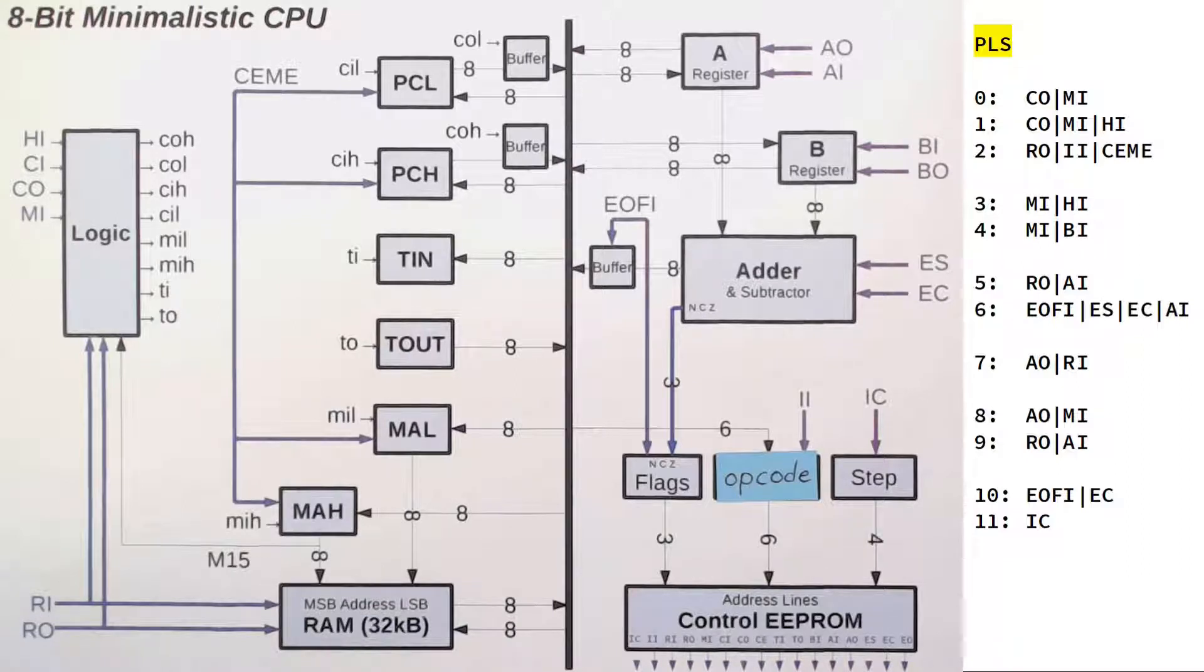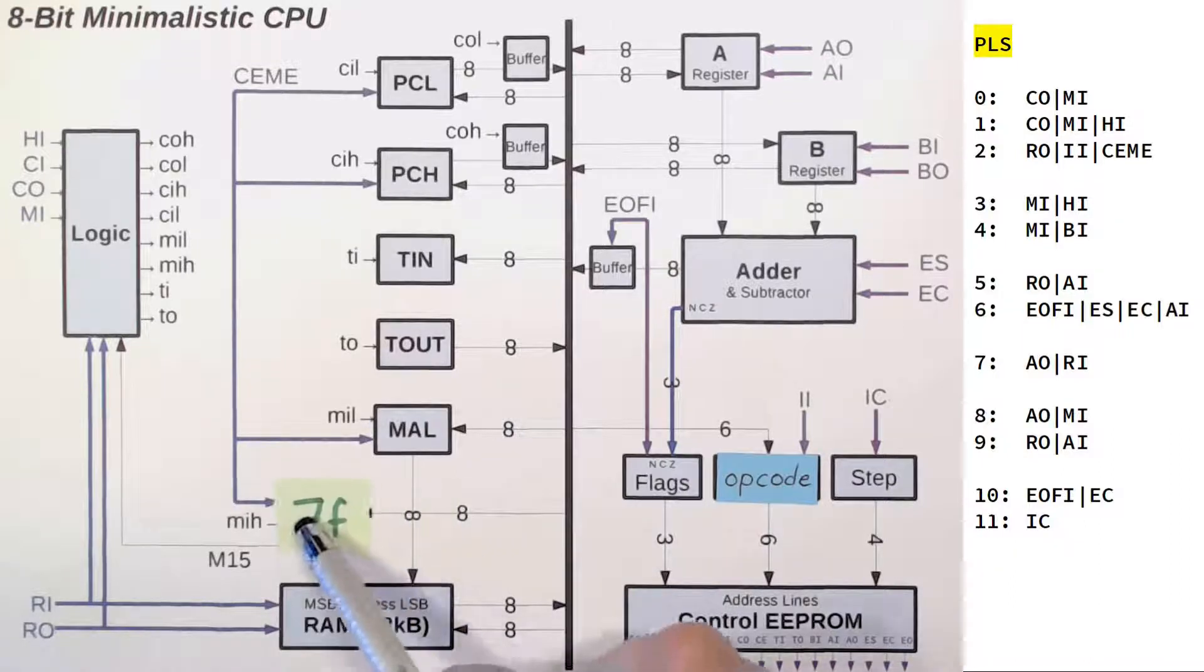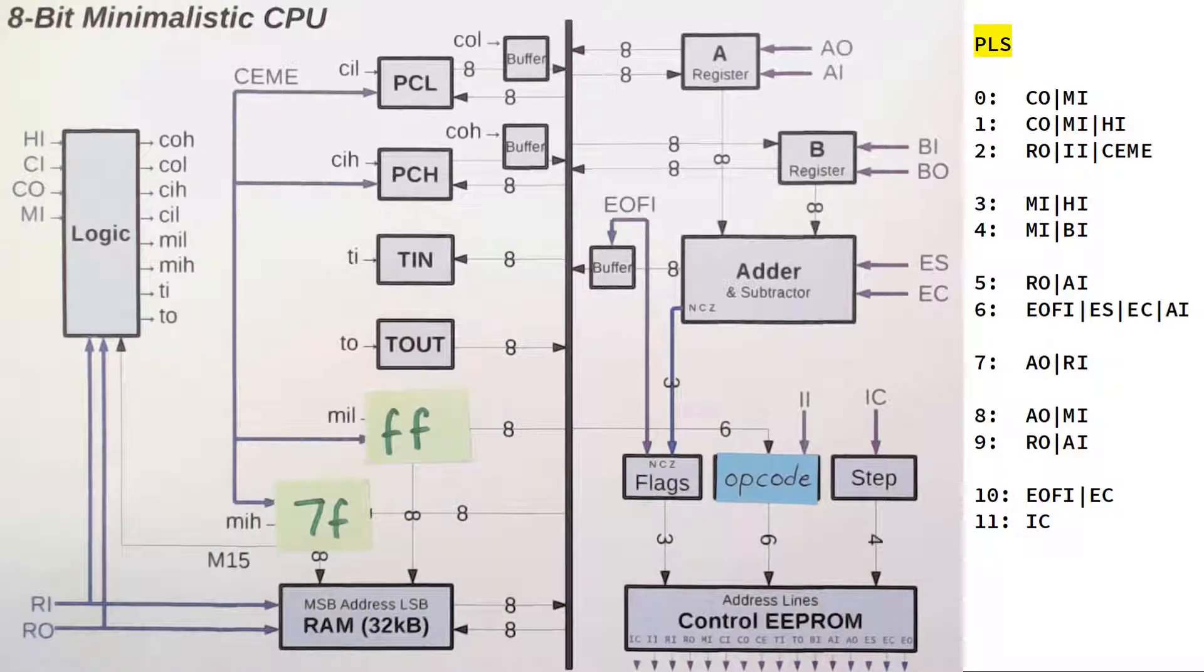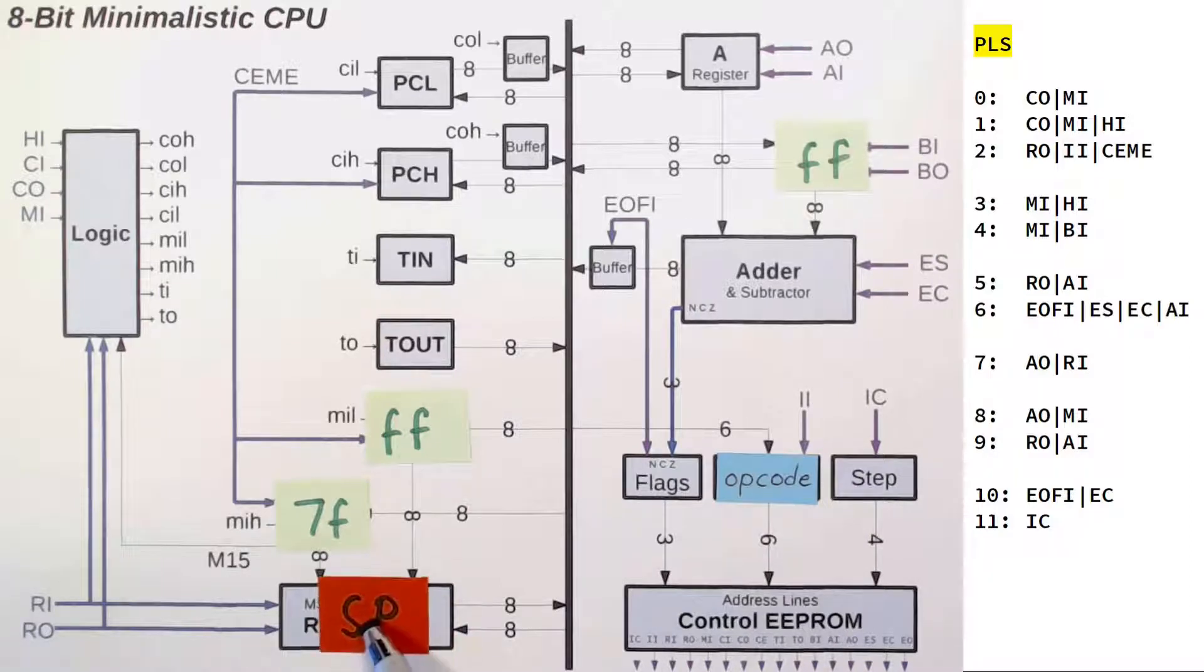Let us now consider the next instruction PLS for pull A from stack, which increments the stack pointer and transfers the previously stored value from the stack back into A. So again the first three steps just fetched the instruction from memory. Memory in high and memory in B in again load the value 7FF into the MAR and also copies FF into our B register, exposing our stack pointer again.